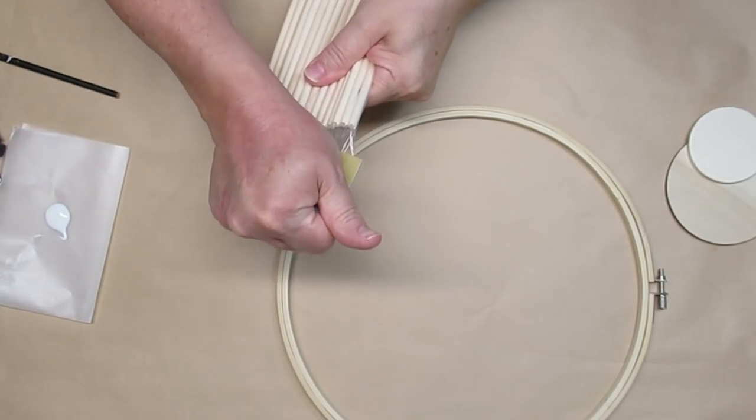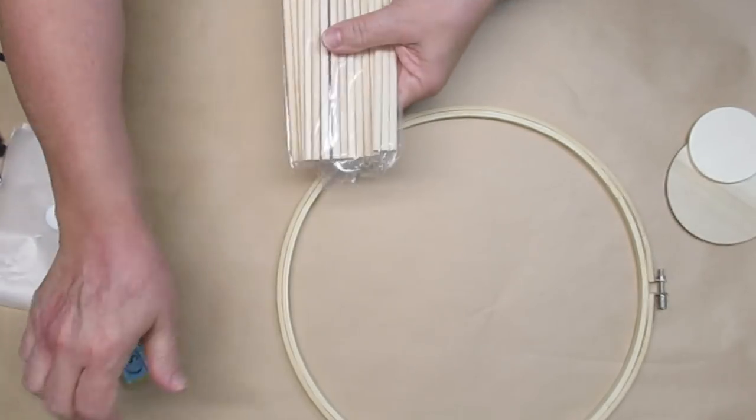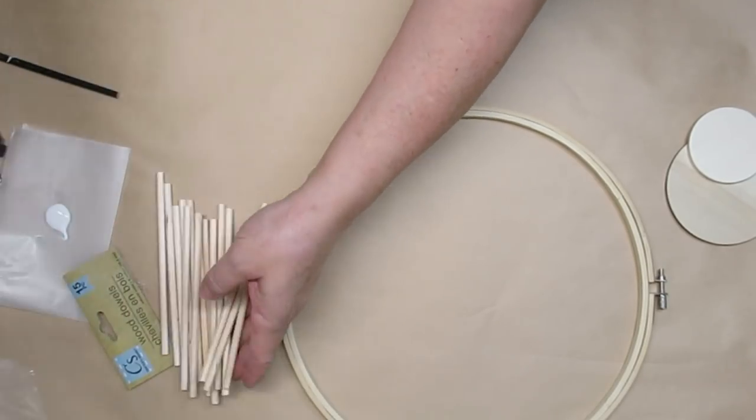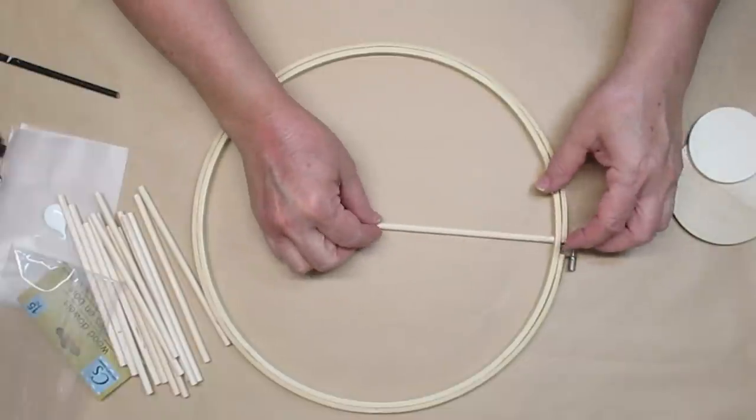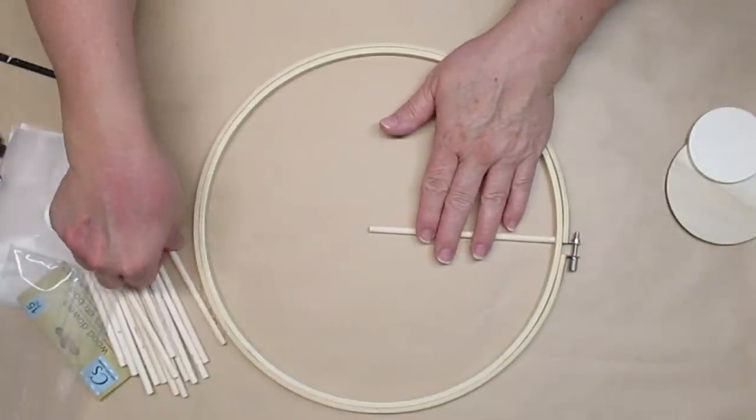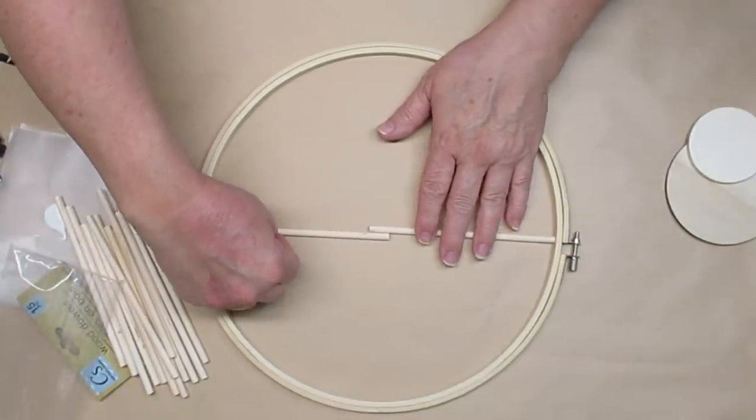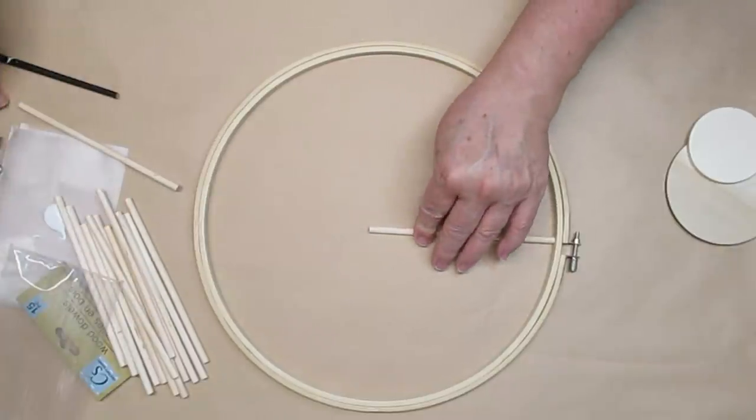I've been wanting to make a wagon wheel wreath for a really long time. I know that Dollar Tree carries a wire form but I wanted mine to be wood. So I'm using a 12-inch embroidery hoop, both of the hoops, and some of these six-inch dowels from the Dollar Tree.